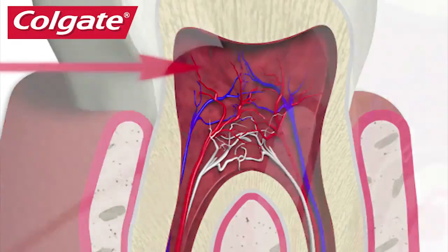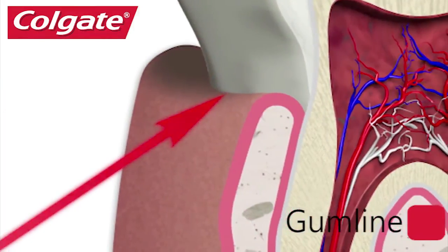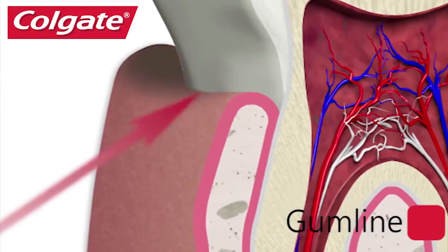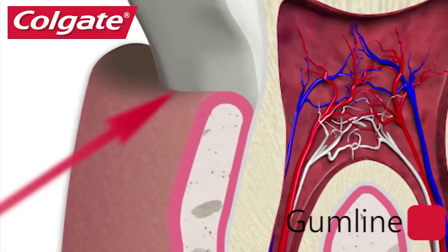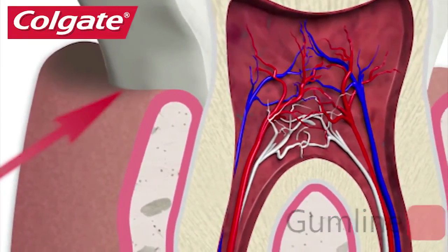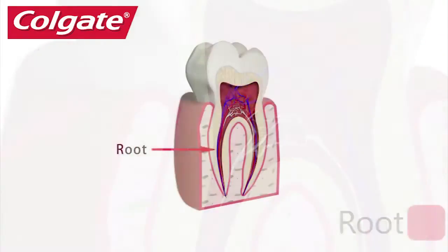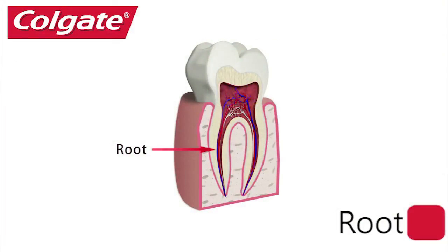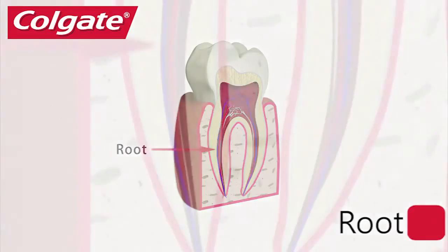The gum line is where the tooth and gums meet. What you don't see in the mouth is two-thirds of the tooth — the root. Premolars and molars have more than one root stabilising them, as there is greater force applied when grinding food.